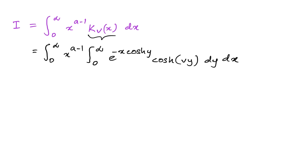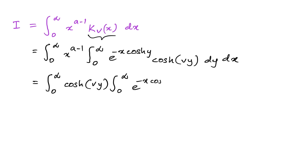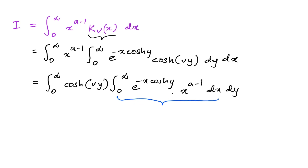Writing out the dx, we can rearrange this as the integral from 0 to infinity of cosh(vy) times the inner integral from 0 to infinity of e to the minus x·cosh(y) times x to the a minus 1 dx, then dy.